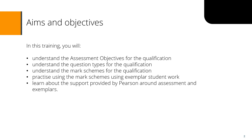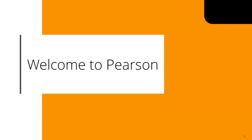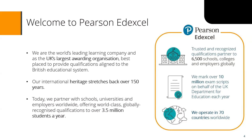My name is Keith Penn and I'm a lead science trainer for Pearson, having been a science teacher to GCSE and physics to A-level for 33 years in London and the southeast of the UK. Here at Pearson, we are the world's leading learning company and the UK's largest awarding organisation, best placed to provide qualifications aligned to the British educational system. We have a heritage stretching back over 150 years, offer globally recognised qualifications to over three and a half million students a year, with six and a half thousand schools, colleges and employers using our materials, marking over 10 million exam scripts for the Department of Education each year, operating in 70 countries.